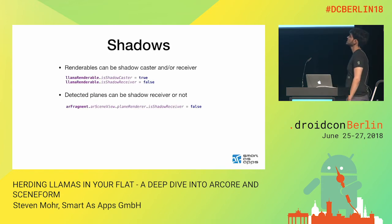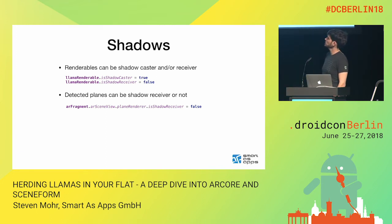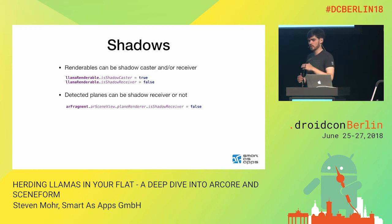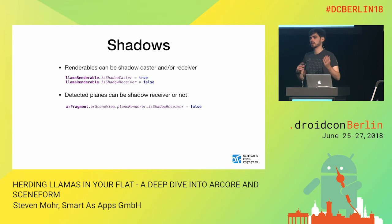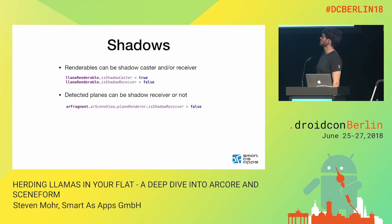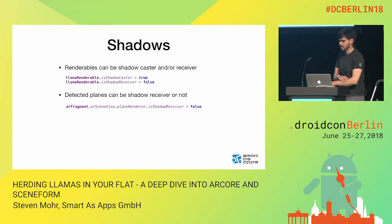What works really nicely is shadows. You can just enable and disable them on every renderable. There are two sides: the shadow caster, meaning this object casts shadows on other objects, and the shadow receiver, meaning other objects can cast shadows on this one. If both are true, the object also casts shadows on itself — for example, if you had a llama with a hat, the hat would cast a shadow on its own back. That's usually the behavior you want for any real-world object.